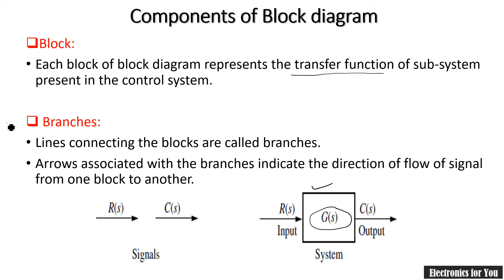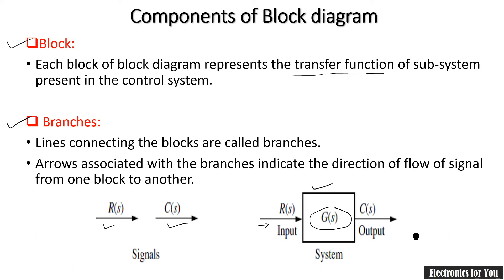The second component is branches. Branches are nothing but the signals. R(s) is the input signal and C(s) is the output signal in case of a block. The arrow going inside is the input signal and the arrow going outside is the output signal.